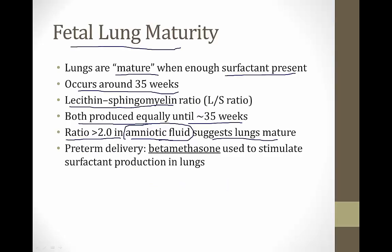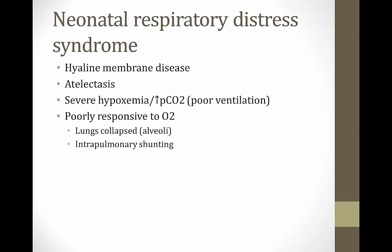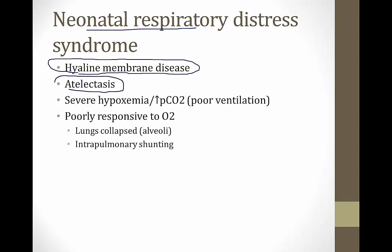Preterm babies delivered before the lungs are mature are given steroids — usually betamethasone — because this stimulates surfactant production. Babies born prematurely often have great respiratory difficulty due to insufficient surfactant, a condition called neonatal respiratory distress syndrome, also known as hyaline membrane disease. These children have atelectasis, severe hypoxemia, and high CO2 levels due to poor ventilation.